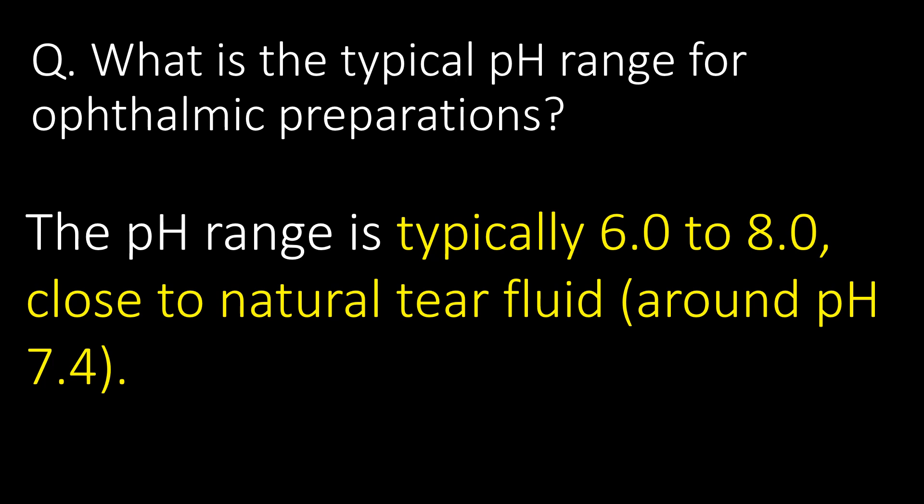What is the typical pH range for ophthalmic preparations? The pH range is typically 6 to 8, close to natural tear fluid, which is around pH 7.4.